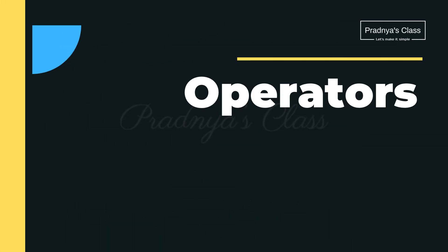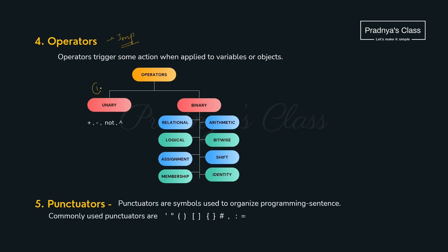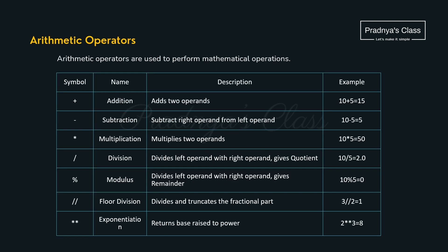The next token is operators — it is very important. Operators are actually of three types. The first type is unary, which operates on a single operand. The second is binary, which operates on two operands. The third is ternary, which operates on three operands. There are a total of eight different types of binary operators. Let's go through all the operators one by one.